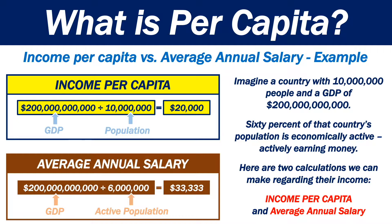However, the active population of the country is only 6 million — that is, there are only 6 million people actively earning money in the country. We divide 200 billion by the active population of 6 million and we get 33,333. As you can see, the average annual salary in this country is $13,000 higher than the income per capita.